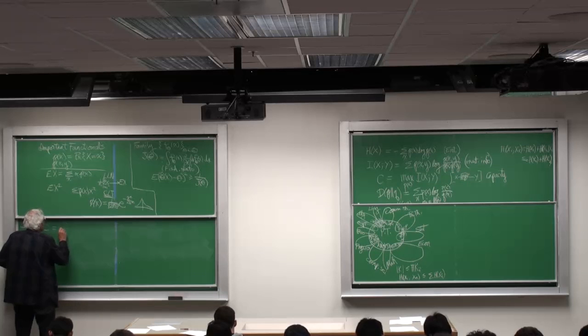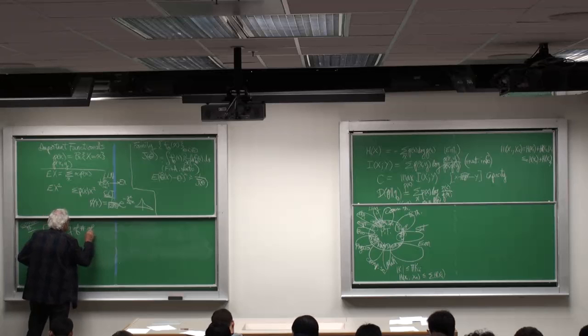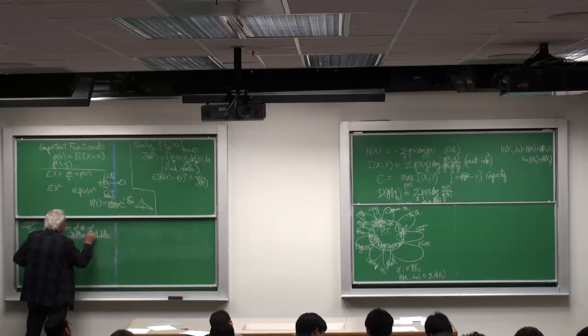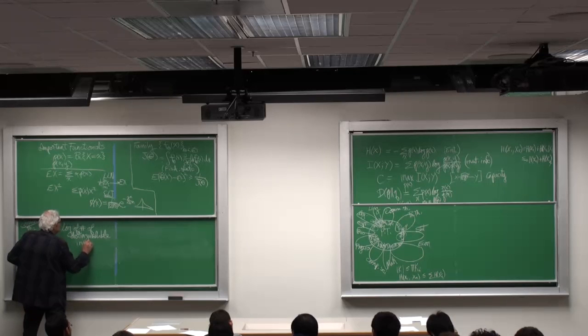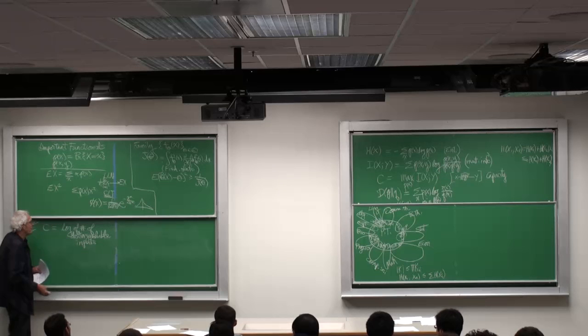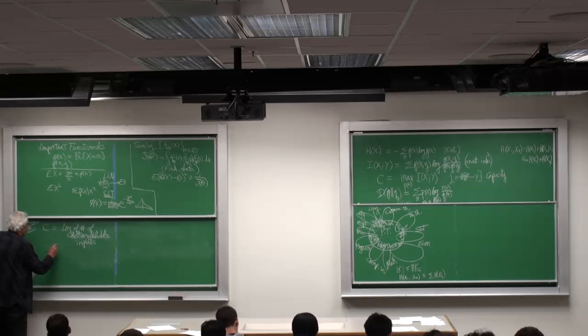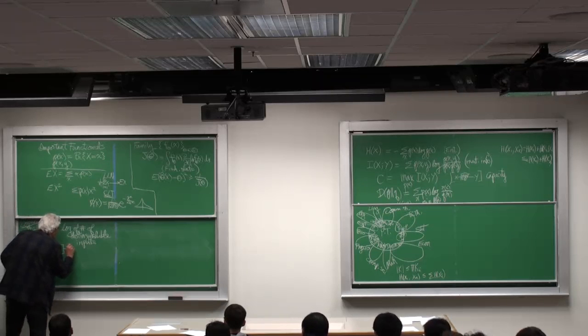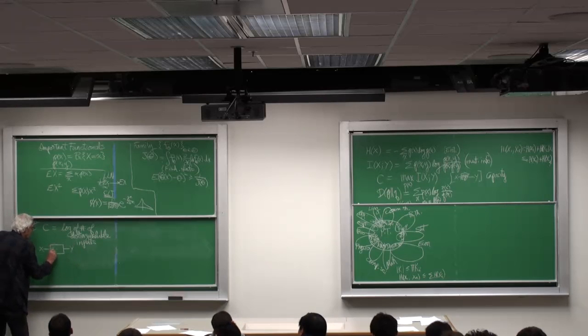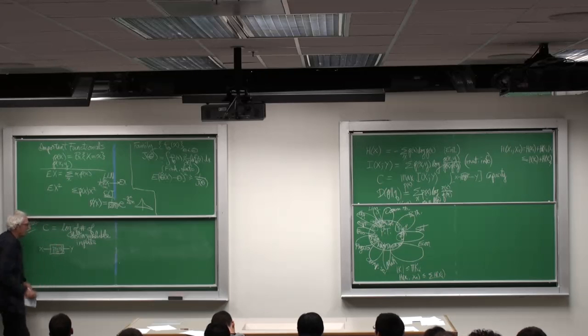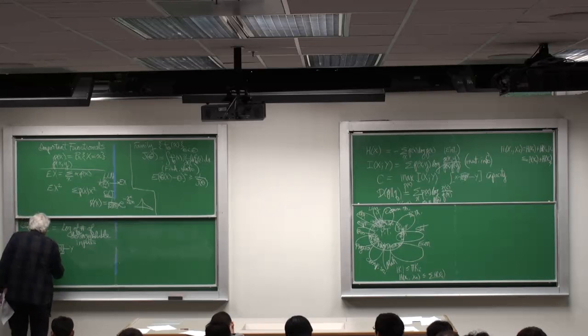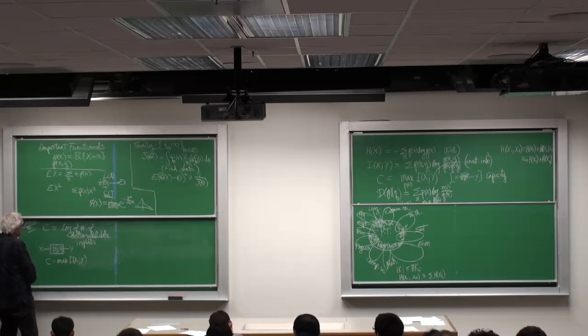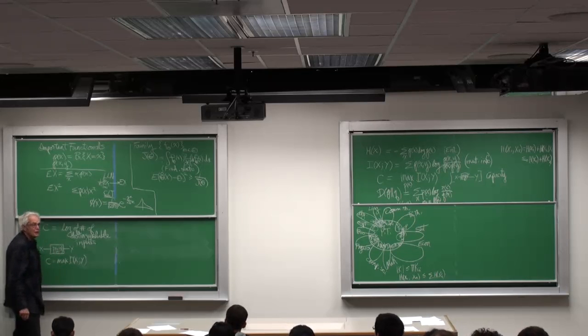C turns out to be the log of the number of distinguishable configurations or inputs or states. So for example, if when I prepare it in state X, I can only observe Y and Y is drawn according to the conditional probability mass function P of Y given X, I can calculate C with max I of X, Y. And C is the log of the number of distinguishable inputs.